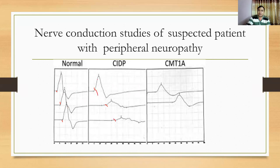In CIDP there is also a conduction block and temporal dispersion — you can see different amplitude magnitudes across segments. Conduction block and temporal dispersion usually suggest CIDP, because these patients have irregular demyelination.